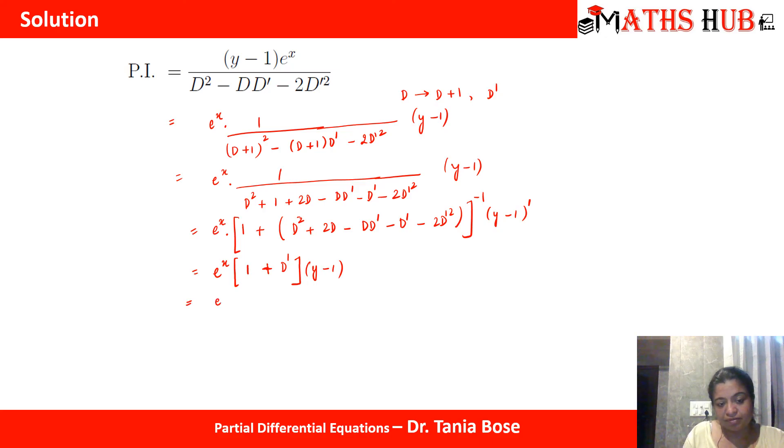When we open up the brackets we get e to the power x times (y minus 1) plus derivative of (y minus 1) with respect to y is 1. This gets cancelled and we get e to the power x into y. Let's add up the two solutions. That will give rise to the complete solution for the PDE. So this is rule number 4.